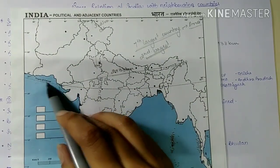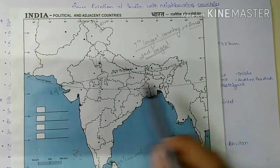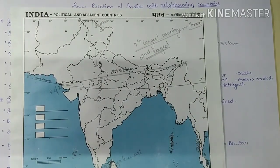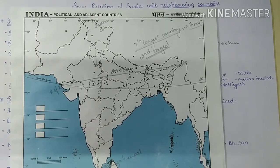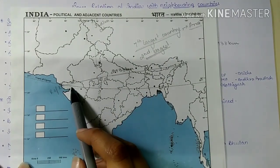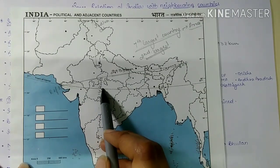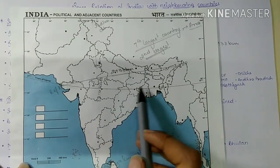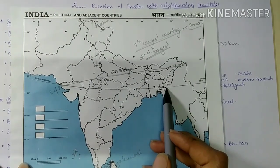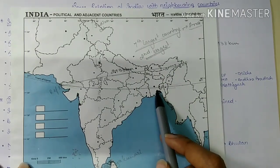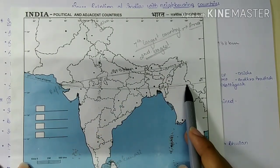Because the Tropic of Cancer passes through India, we have tropical climate as well as a bit of temperate and continental climate. The eight states through which the Tropic of Cancer passes are Gujarat, Rajasthan, Madhya Pradesh, Chhattisgarh, Jharkhand, West Bengal, Tripura, and Mizoram.